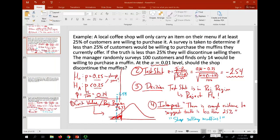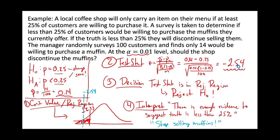We have a test coming up. The last thing we talked about was hypothesis testing. The null hypothesis was set up because we were interested in showing the truth was less than 25% — specifically how many people wanted to see the product — so we assumed it was 25% until we could show it was lower.